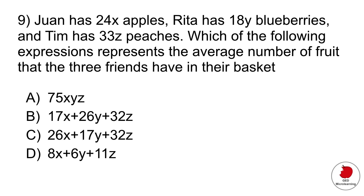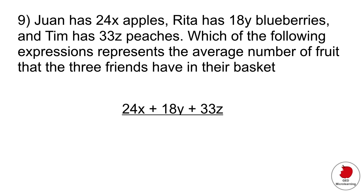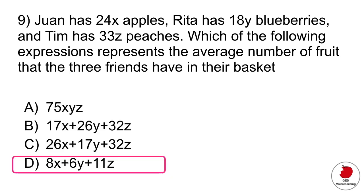One has 24x apples, Rita has 18y blueberries and Tim has 33z peaches. Which of the following expressions represents the average number of fruit that the three friends have in their basket? All right so in this case you have three different expressions right and you can't add the x, y, and z together because they're different elements but they're asking you to look at the average number of fruits that the three friends have. So what you would do is simply divide everything by three and then that would give you the average of each of these fruits, which is option D.